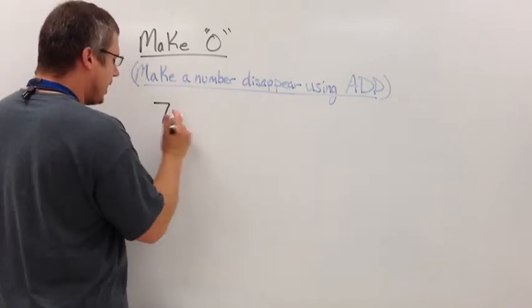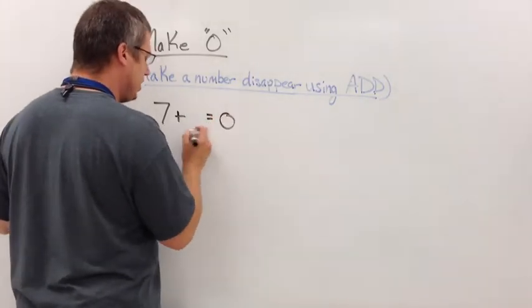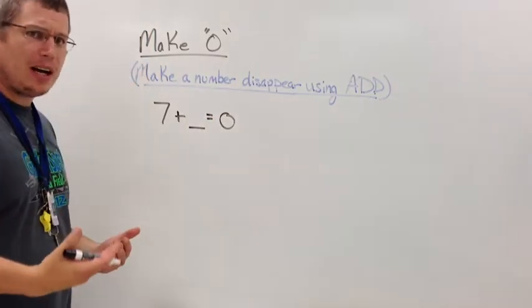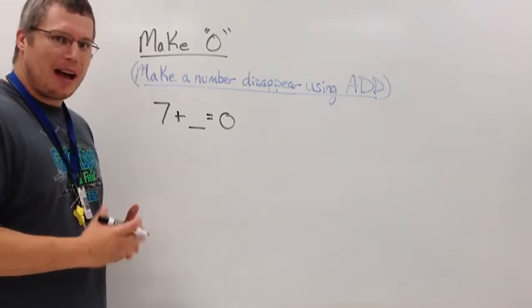So here's a seven. I want to make them go bye-bye. I'm not allowed to be here anymore. I need them to be worth zero. Well, the question becomes, okay, what do I add to seven in order to end up with a value of zero?